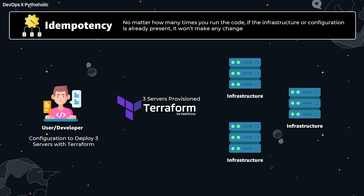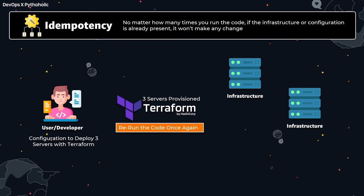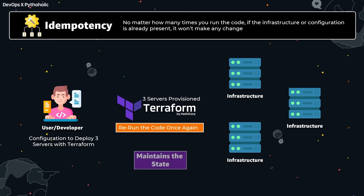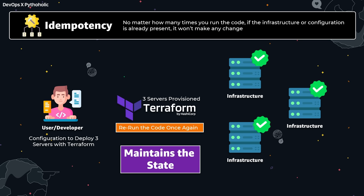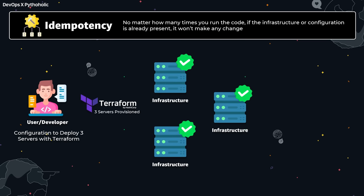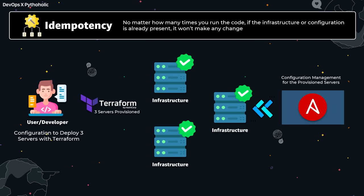That is why idempotency is really important when it comes to resource management. Once you've provisioned your infrastructure resources for your application, you can use config management to ensure you have the right updates and values across all the servers you intend to. That's where IaC and config management work hand in hand. As Terraform itself says: configuration management tools install and manage software on a machine that already exists.